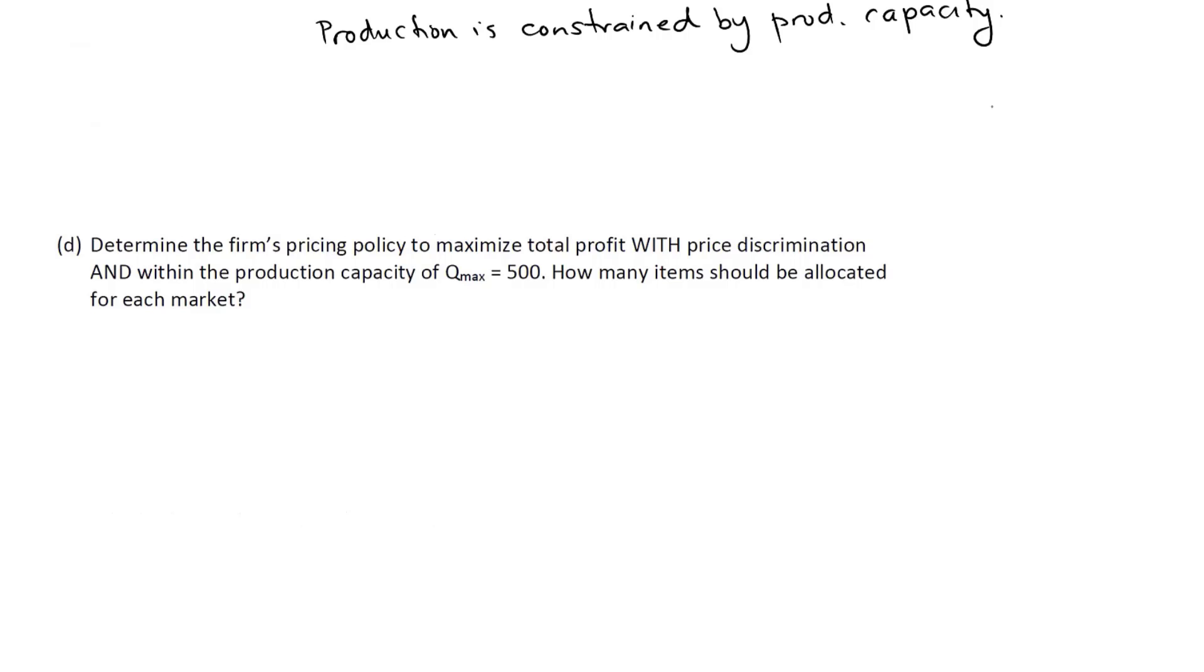So now what we're going to do is determine the firm's pricing policy to maximize total profit with price discrimination and with this external constraint, this production capacity of 500. How many items should be allocated for each market as well?